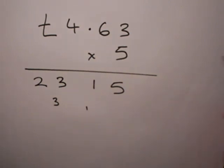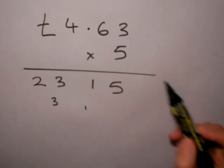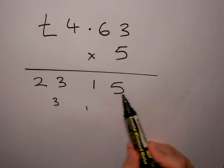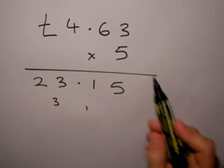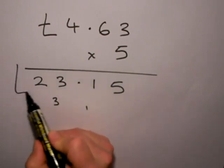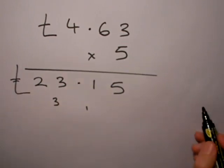Now, because this is a decimal, I multiply my money and I've got a decimal point in there. I've got two numbers after the decimal point. So, two numbers after the decimal point, I need two numbers after the decimal point in the answer. So, 4 pounds 63 multiplied by 5 is 23 pounds and 15 pence.